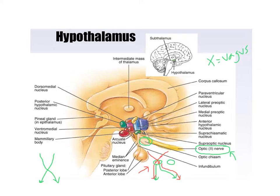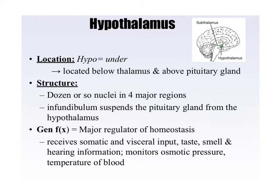And super important: here's your hypothalamus. Maybe its most important role is it controls the master gland — the pituitary gland. This gives it a big role in homeostasis, the hypothalamus together with the pituitary gland. Now, some functions of the hypothalamus: it's called the hypothalamus because hypo means under, and it is located inferior to the thalamus. The infundibulum is the stalk which suspends the pituitary gland from the hypothalamus — you probably won't need to know that.